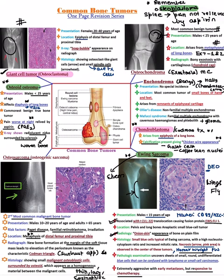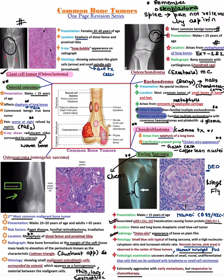Enchondroma is a benign tumor; if it becomes malignant, that is chondrosarcoma. It is the most common tumor involving the small bones. It arises mostly from the metaphysis and may extend to the epiphysis. Two syndromes to know: Ollier's disease — multiple enchondromas that are non-familial; Maffucci syndrome — familial multiple enchondromas with cavernous hemangioma, plus glioma, plus ovarian tumor.